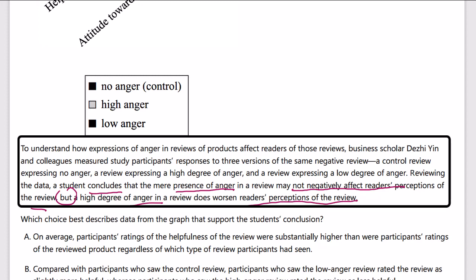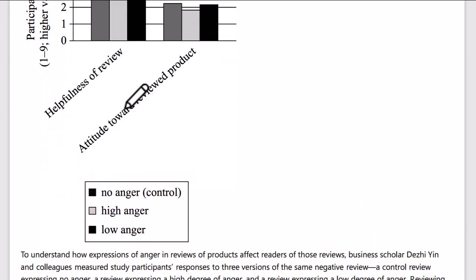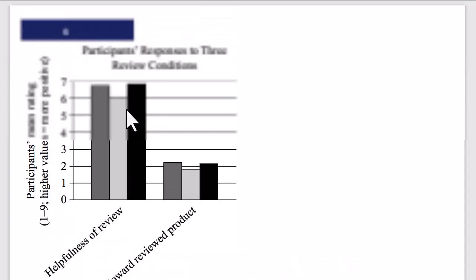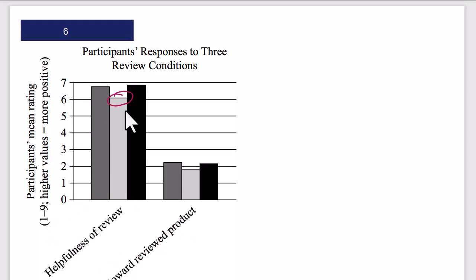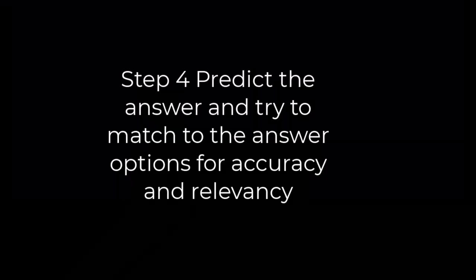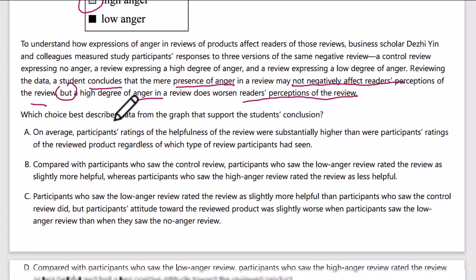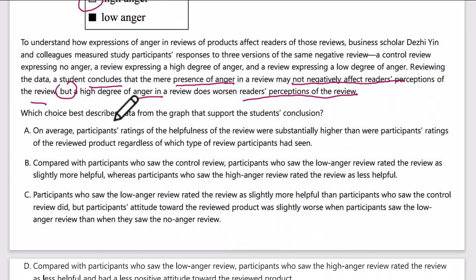Once I have the core idea, I move to step three: check the chart or the table. I'm looking for how the data fits with my core ideas from the paragraph. We notice the helpfulness of a review — if I have high anger, it's lower. So I have a lower helpfulness rating at high anger. My prediction is to look for the fact that the high anger bar is lower than the others among my answer choices.